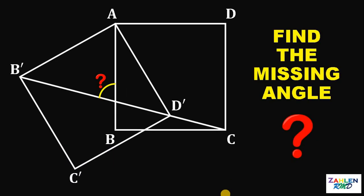If the square ABCD is rotated around the vertex A to produce the square AB'C'D', then the question is, what is the measure of the angle shown?